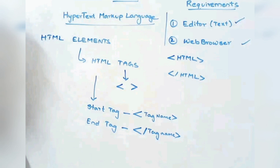Every tag has a start tag and an end tag. The start tag is represented as less-than, then the tag name, then greater-than. The end tag is represented as less-than, then a forward slash, then the tag name, then greater-than. Any text is implemented using these tags in HTML.